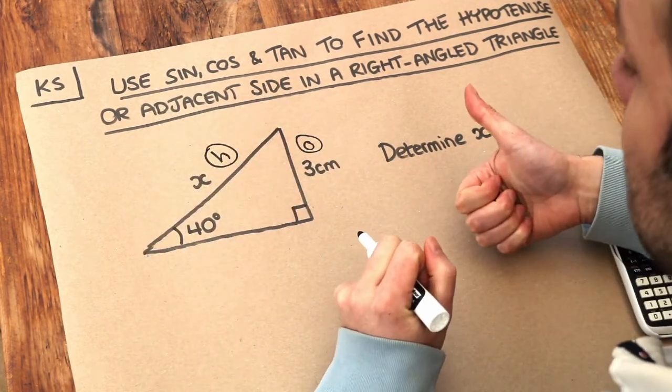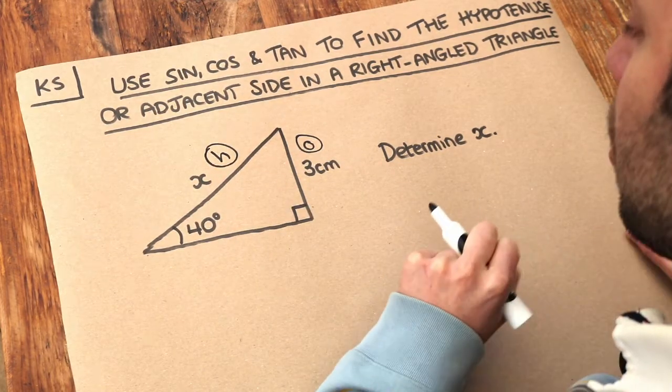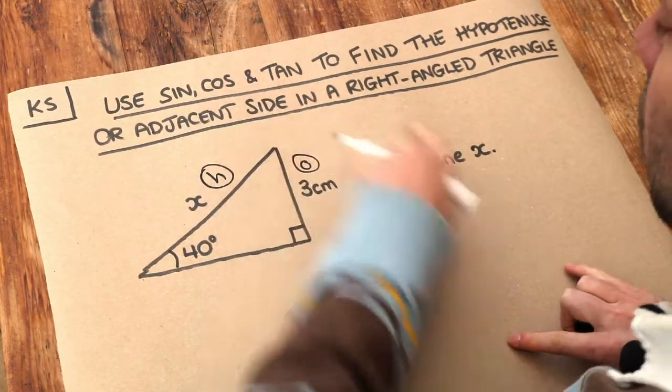So remember step one is to label your sides, involving the opposite and hypotenuse. Step two is to work out whether we need to use sine, cos or tan.